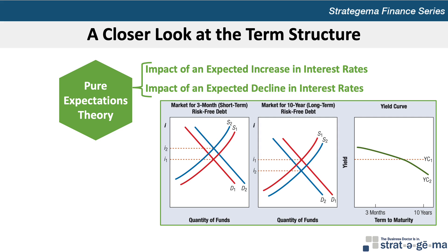Based on the expectation of lower interest rates in the future, the supply of funds provided by investors will be low for short-term funds and high for long-term funds. This places upward pressure on short-term yields and downward pressure on long-term yields. Overall, the expectation of lower interest rates causes the yield curve to pivot downward or clockwise, illustrating higher yields in the short-term and lower yields in the long-term.